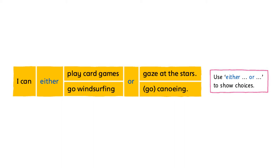Look at the grammar table. I can either play card games or gaze at the stars. Please take note that the speaker can do one of the two activities — both are equally desirable. We use either or to show choices or express alternatives; it means we can do one of the two activities. Like would rather than, we do not need to repeat the verb after or when both verbs are the same.